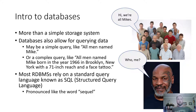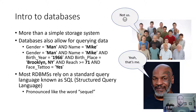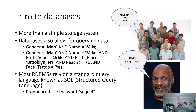Most RDBMS systems rely on a standard query language known as SQL — Structured Query Language, but pronounced like the word 'sequel.' We rely on SQL to pull and query information from a database. The simple query would look like: gender equals man AND name equals Mike. The AND means both conditions must be true. The more complex query: gender equals man, name equals Mike, birth year equals 1966, birth place equals Brooklyn New York, reach greater than or equal to 71 inches, and face tattoo equals yes.